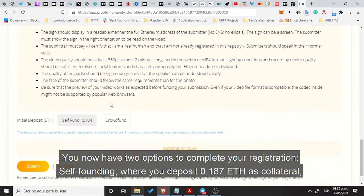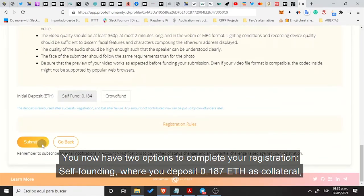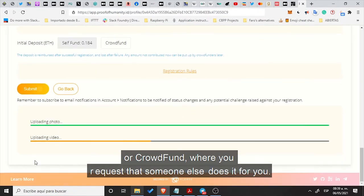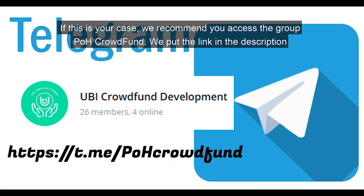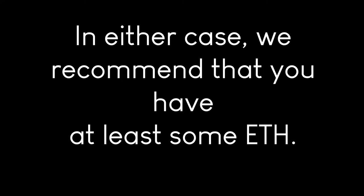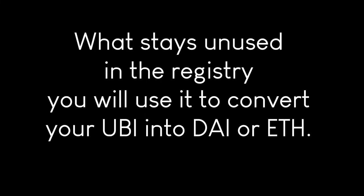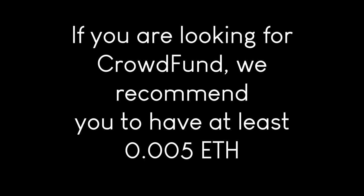You now have two options to complete your registration. Self-Funding, where you deposit 0.187 ETH as collateral, or CrowdFund, where you request that someone else does it for you. If this is the case, we recommend you access the group Proof of Humanity CrowdFund — link in the description. In either case, we recommend that you have at least some ETH. If you will pay your deposit yourself, have at least 0.22 ETH. What stays unused in the registry you will use to convert your UBI into DAI or ETH. If you are looking for a CrowdFund, we recommend you to have at least 0.005 ETH.